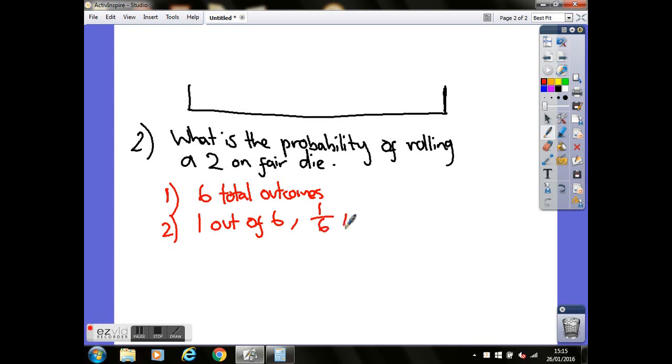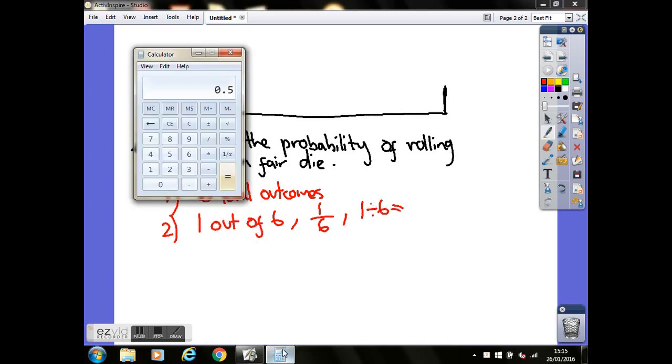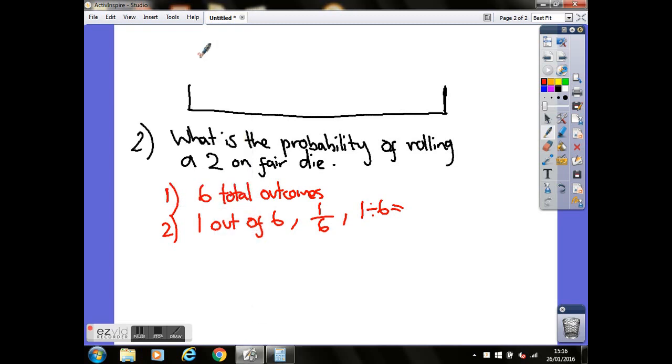And then again, it's common practice to change that across to a decimal, so that would be 1 divided by 6, it's top divided by bottom. So if we bring the calculator up for that, 1 divided by 6 equals, so you've got 0.16 recurring. So it's common practice to round that off to two decimal places, so we'll call that 0.17. So write that on here, 0.17. So again, that's the probability of this event occurring as a decimal.